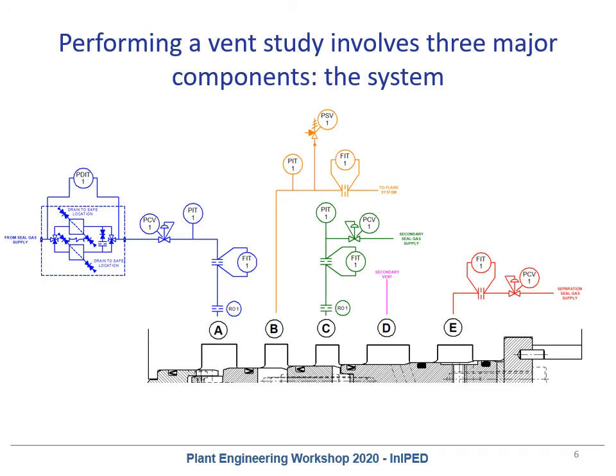The dry gas seal system is probably the most complicated piece of a vent study, and the reason is there are so many different dry gas seal systems out there. I've placed a P&ID on screen representing a reasonably rudimentary dry gas seal system. Port A is the seal gas supply, Port B is the primary vent, Port C is the secondary seal gas supply, Port D is the secondary vent, and Port E is the separation seal gas supply.